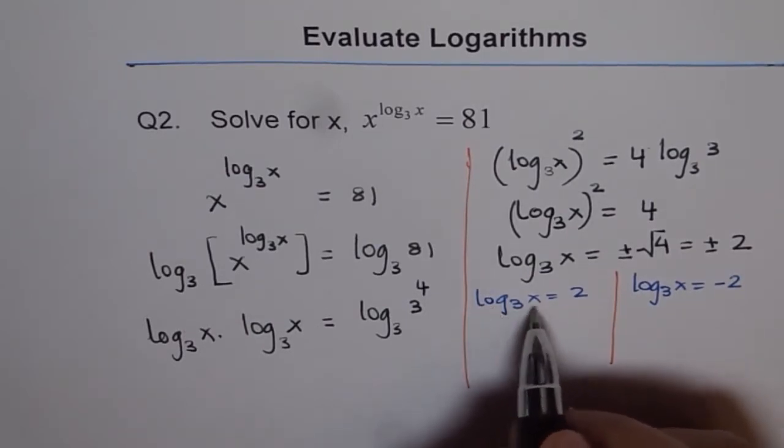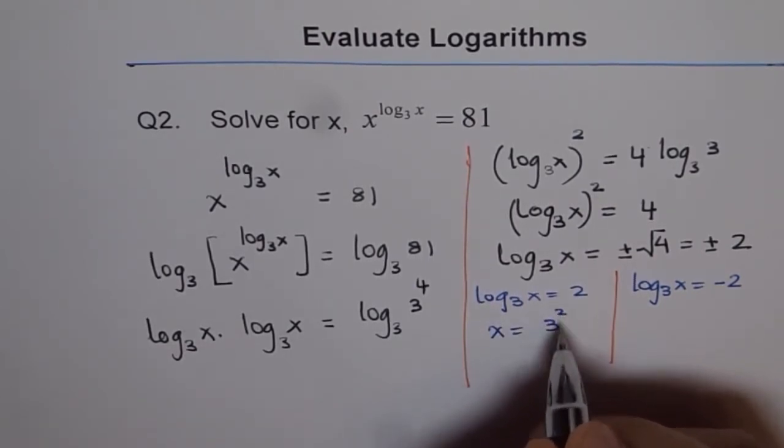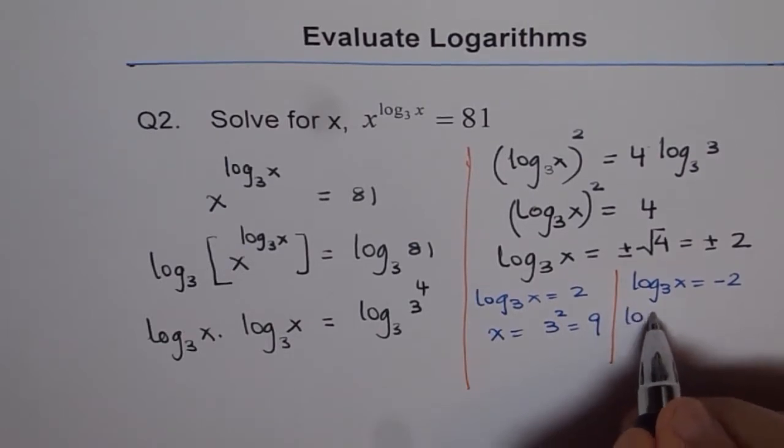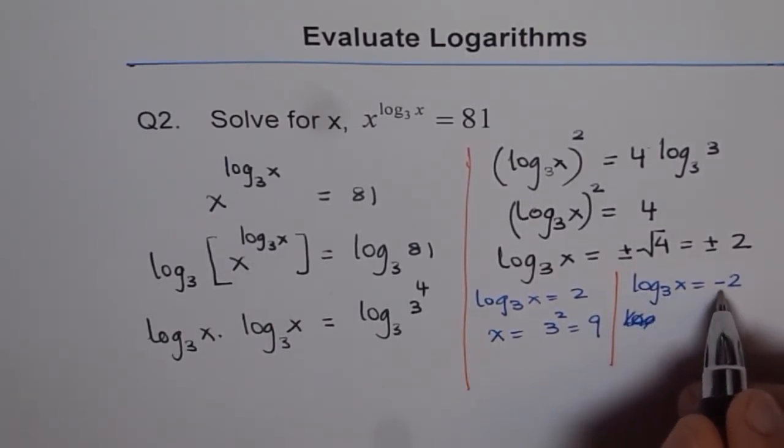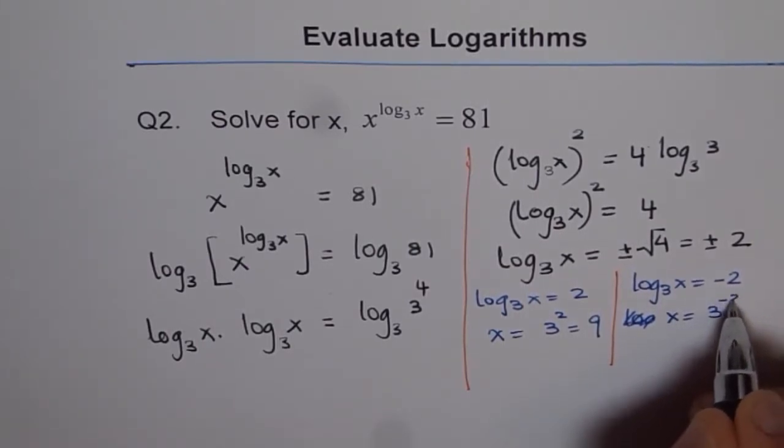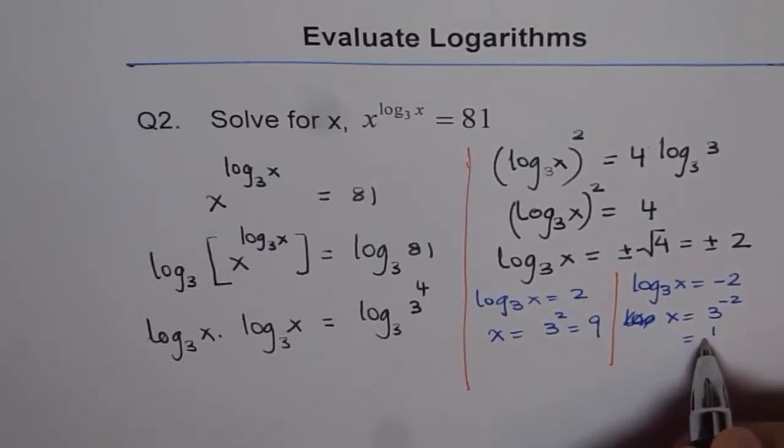So, if log base 3 of x equals to 2, then what is x equals to? So, we get x equals to 3 to the power of 2, which is 9. And if log base 3 of x equals to minus 2, then x is equals to 3 to the power of minus 2. Or, x equals to 1 over 9.